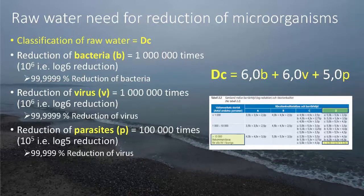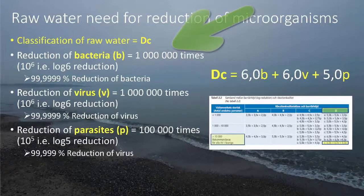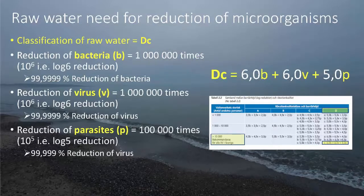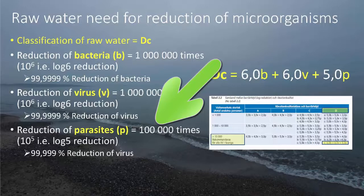That is our minimum safety in regard to producing a drinking water from this raw water source. So reduction of bacteria, how many times? Well 1 million times reduction is minimum needed for our raw water. For viruses, well log 6 as well as for bacteria. So for viruses also a 1 million times reduction of potential viruses. And finally reduction of parasites, log 5 reduction, 100,000 times.